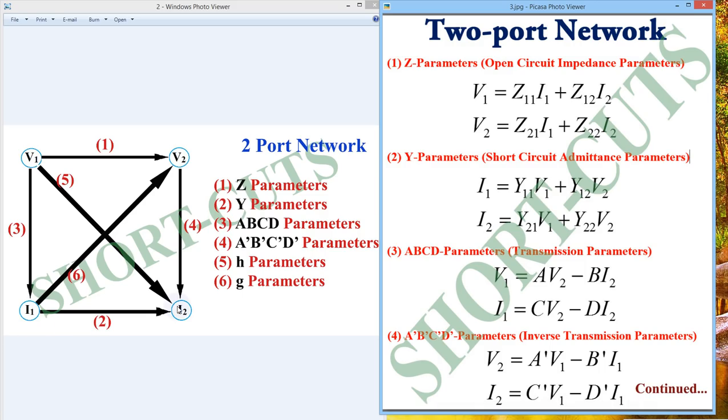Similarly we can see for Y parameter also. Y parameter: i1 and i2 will be in primary side and in secondary side your matrix form will come. So y11 into v1 plus y12 into v2, and i2 equal to y21 into v1 plus y22 into v2.